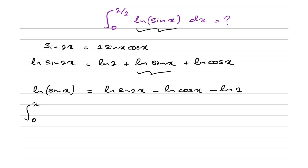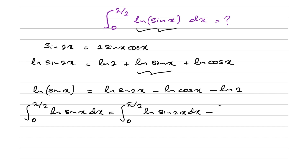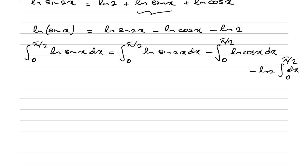We can write: the integral from 0 to π/2 of ln(sin x) dx equals the integral from 0 to π/2 of ln(sin 2x) dx, minus the integral from 0 to π/2 of ln(cos x) dx, minus natural log of 2 times the integral dx from 0 to π/2.